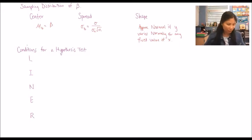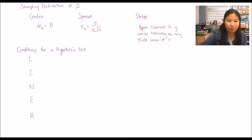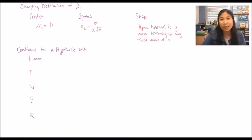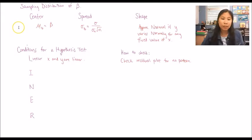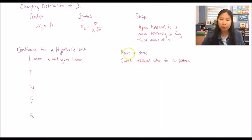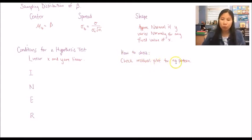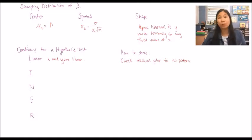The L stands for linear: x and y must have a linear relationship. To check that, you look at the residual plot. In a residual plot, we want the points scattered with no pattern. So you make a residual plot and state that there is no pattern — confirming x and y are linear.